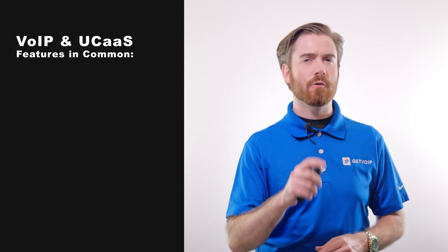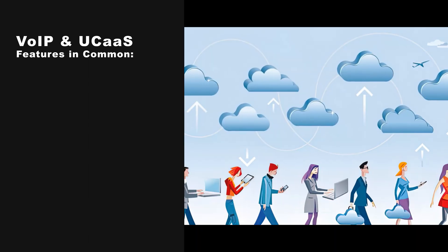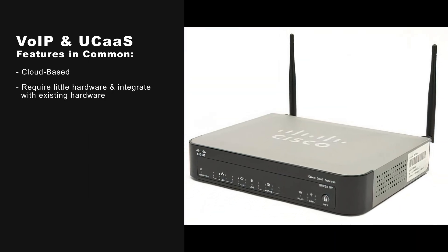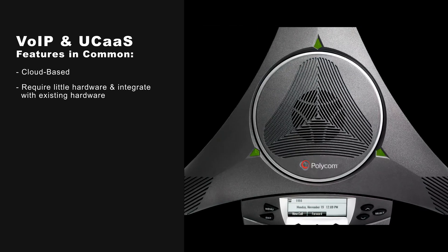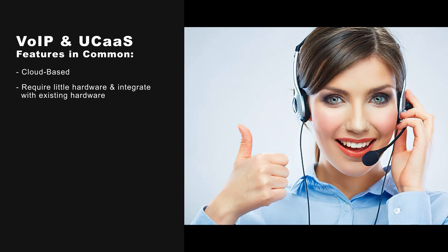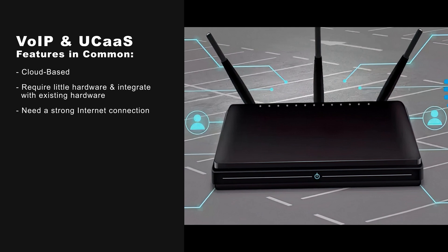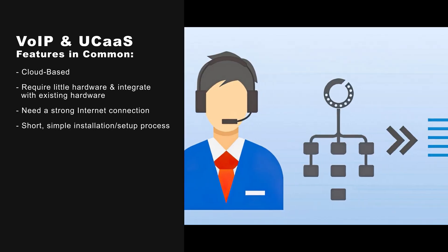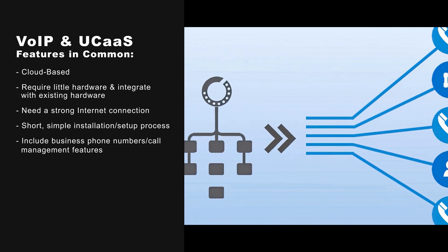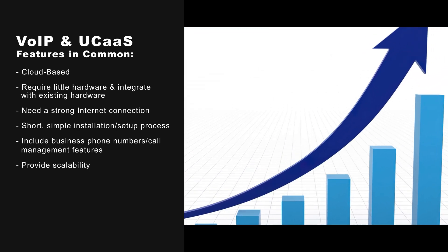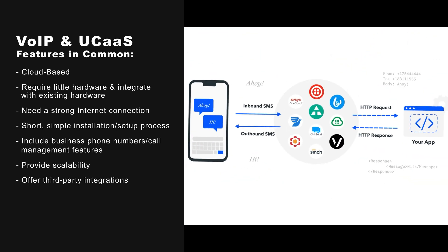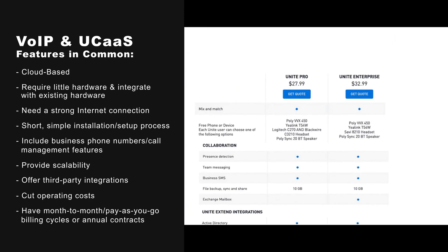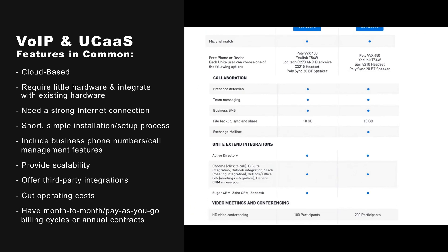VoIP and UCaaS share the following in common: they're cloud-based, require little hardware and integrate with existing hardware such as handsets, speakers, desk phones, smartphones, and headsets. Both need a strong internet connection, have a short and simple installation setup process, include business phone numbers and call management features, provide scalability, offer third-party integrations, cut operating costs, and have month-to-month, pay-as-you-go billing cycles or annual contracts.